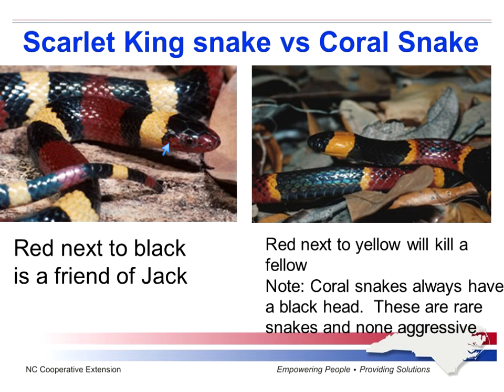When I was a little kid, I learned that when red is next to black, it is a friend of Jack. Whereas the coral snake — when red is next to yellow, it will kill a fellow. Even though the coral snake is the most poisonous snake in North Carolina, you don't hear a lot about it because it is so rare.